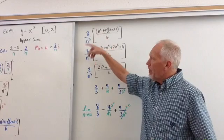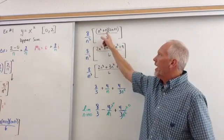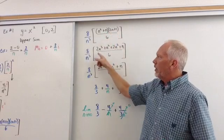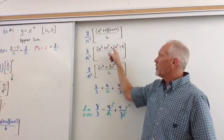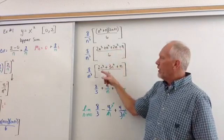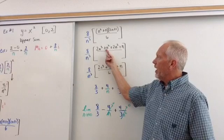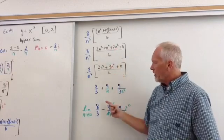What do we do with that? Well, we distribute. n times n plus 1 is n squared plus n times 2n plus 1 is 2n cubed plus n squared plus 2n squared plus n. Then simplify that. Well, n squared plus 2n squared is 3n squared divided by 6.